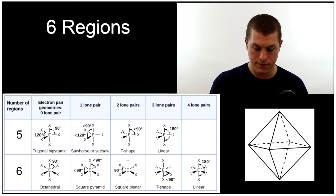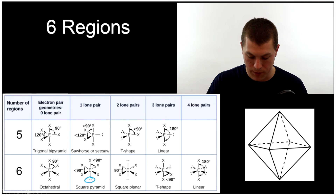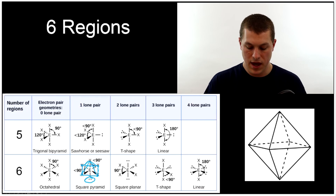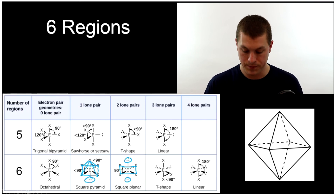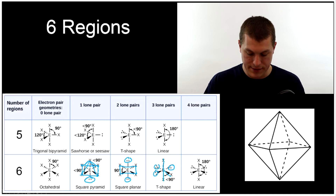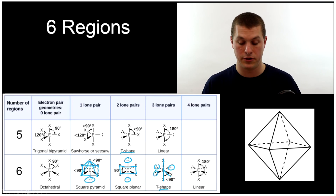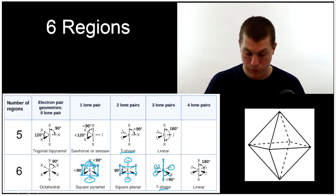The last set: with six regions of electron density and zero lone pairs we get octahedral. Replace one atom with a lone pair and we get a square pyramid — a square base rising up to the central atom. Remove two atoms and replace with lone pairs and we get square planar. Remove three atoms for three lone pairs and we get T-shaped again, similar to the T-shape from five regions. Remove four atoms and replace with lone pairs and we get linear, just like we saw before.